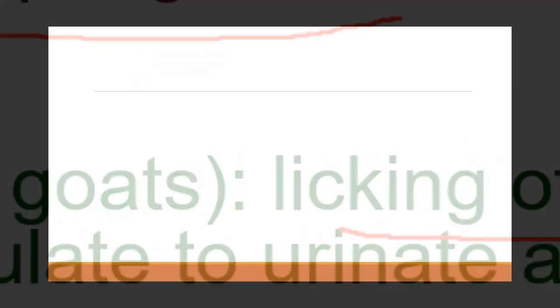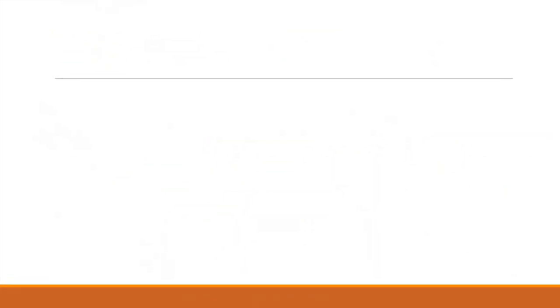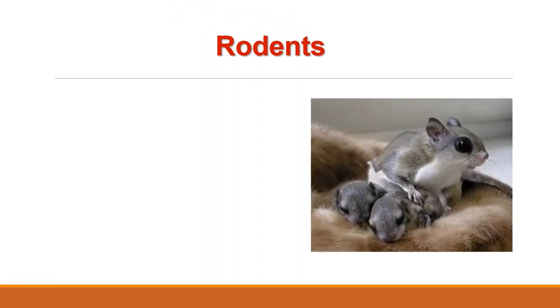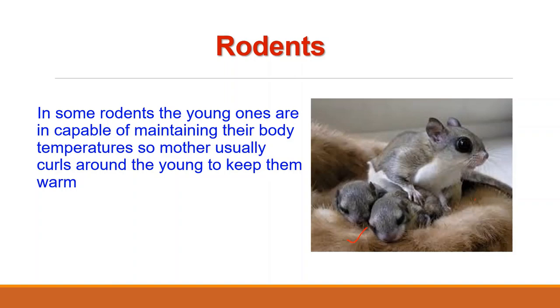In case of rodents and some carnivores, altricial young ones are incapable of maintaining their body temperature soon after birth. So in these animals, the mother usually curls around the young to keep them warm. In order to avoid detection by predators, for altricial species, the mother minimizes her visits to the nest for feeding and grooming of the young.